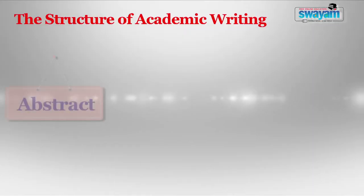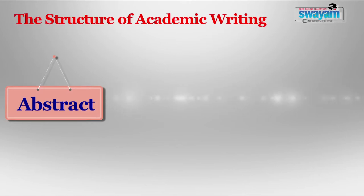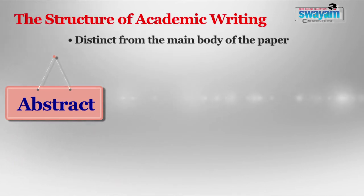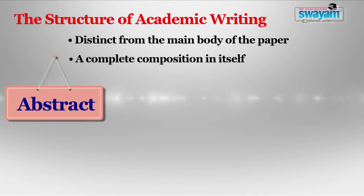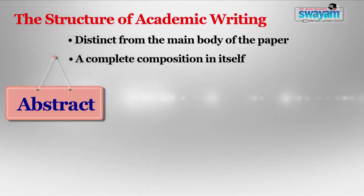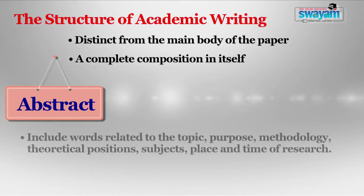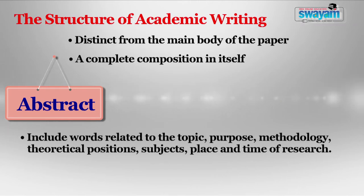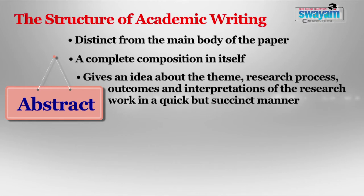The next important section is that of Abstract. Abstract is a short paragraph that appears first in the reading sequence, immediately after title and author details, and before the introduction. Abstract is distinct from the main body of the paper and is a complete composition in itself. It is a standalone unit and it does not transition into another section. A reader's decision to read the paper often depends upon whether the abstract is clear and interesting. The reviewers, editors, and evaluators base their first opinion on the basis of the abstract.